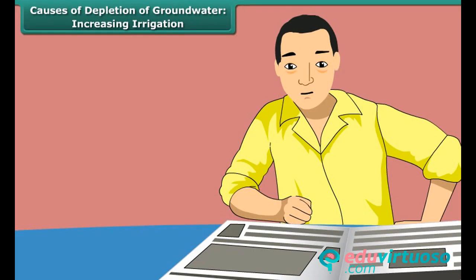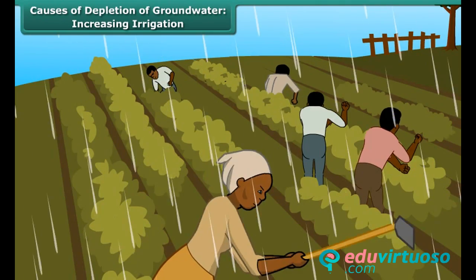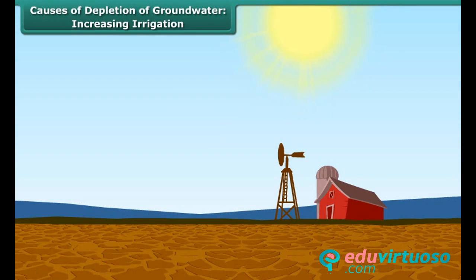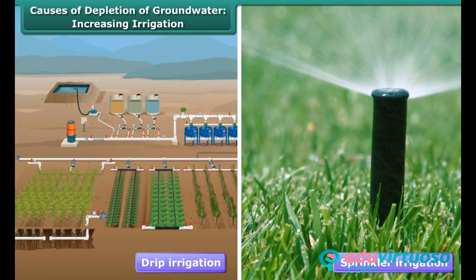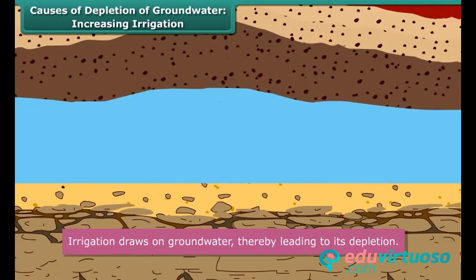A large number of farmers in India depend on rains to water their fields. Crops fail when rainfall is scanty. Hence, there is a greater emphasis on irrigation. Irrigation systems like drip irrigation and sprinkler irrigation are promoted to ensure regular water supply to crops, whether there is rain or not. Irrigation draws on ground water, thereby leading to its depletion.